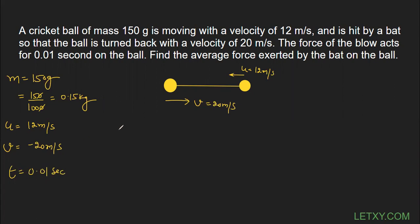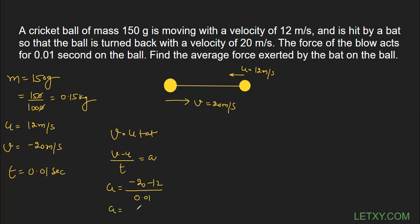For Method 1, we have v, u, and t given, so we can calculate acceleration. Using the first equation of motion, v = u + at, we can rearrange to get a = (v - u) / t. So a = (-20 - 12) / 0.01 = -32 / 0.01, which gives us -3200 meters per second squared.